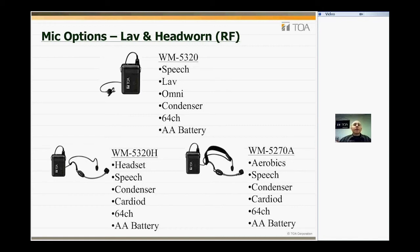The WM-5278 is a specialized aerobics microphone for applications where you may get warm and sweaty — a gym or community center. It's less susceptible to moisture and sweat, used more for speech. It is condenser style, quite sensitive, with a cardioid pickup pattern and 64 channels, all off AA batteries.